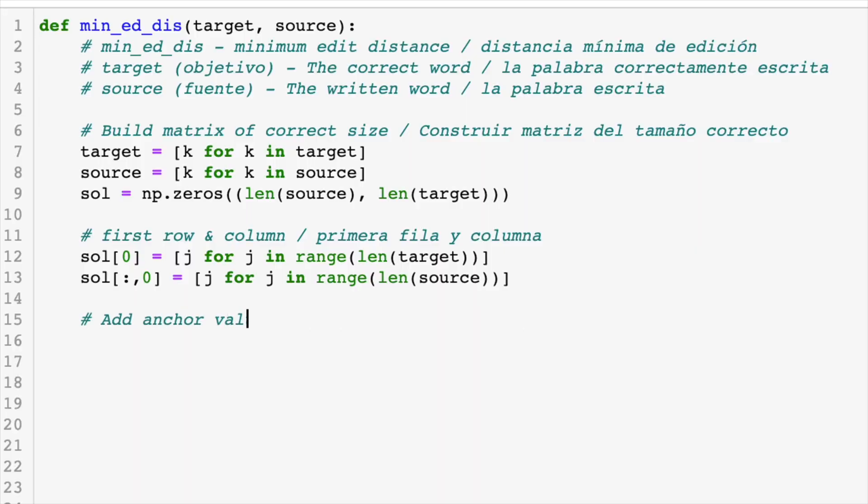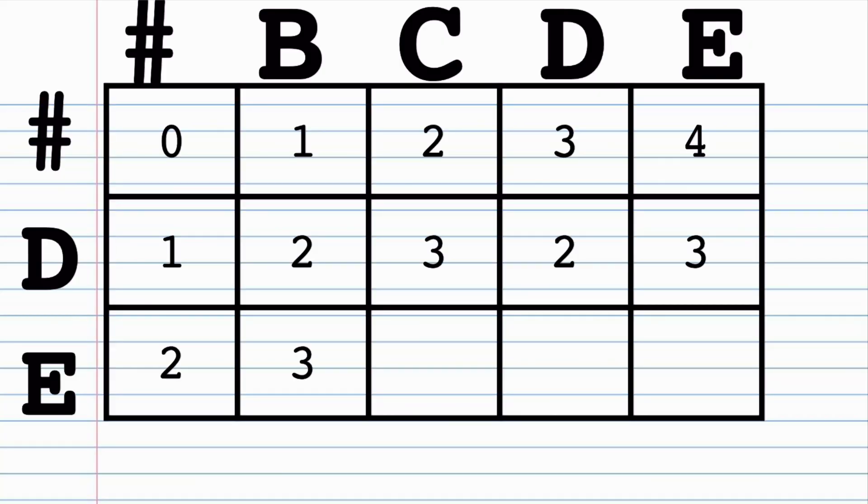Let's put this part in our code. Add an anchor value. If the second target letter is not the same as the second source letter, then we say sol at one comma one is equal to two. If not, it just stays at zero. Now we could continue filling in each spot just like we did before, but I'm going to show you a pattern that will make this so much faster.